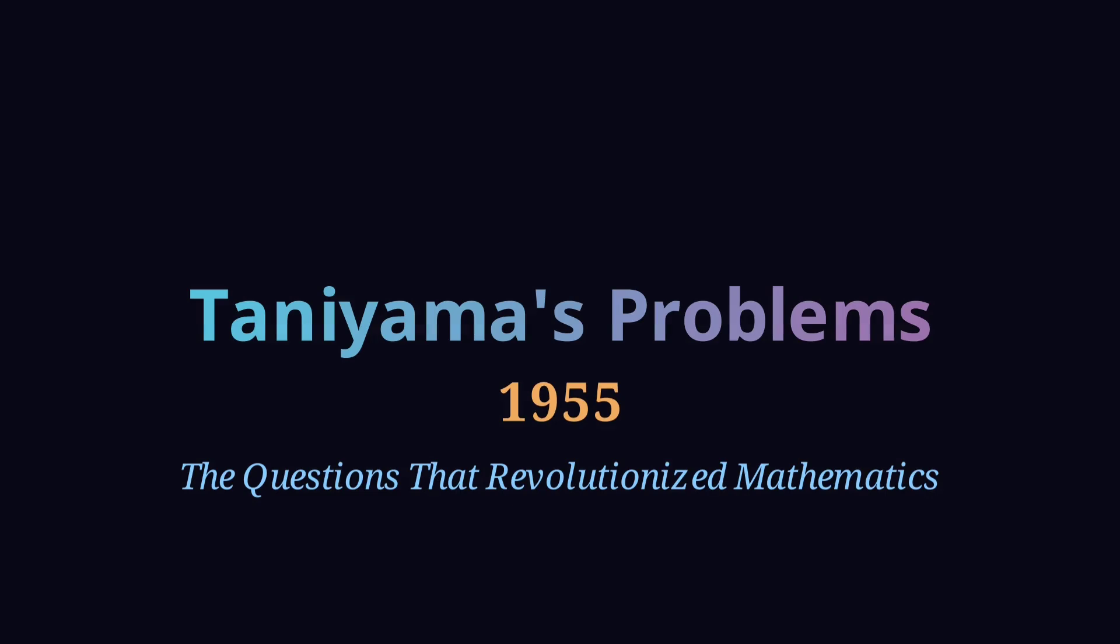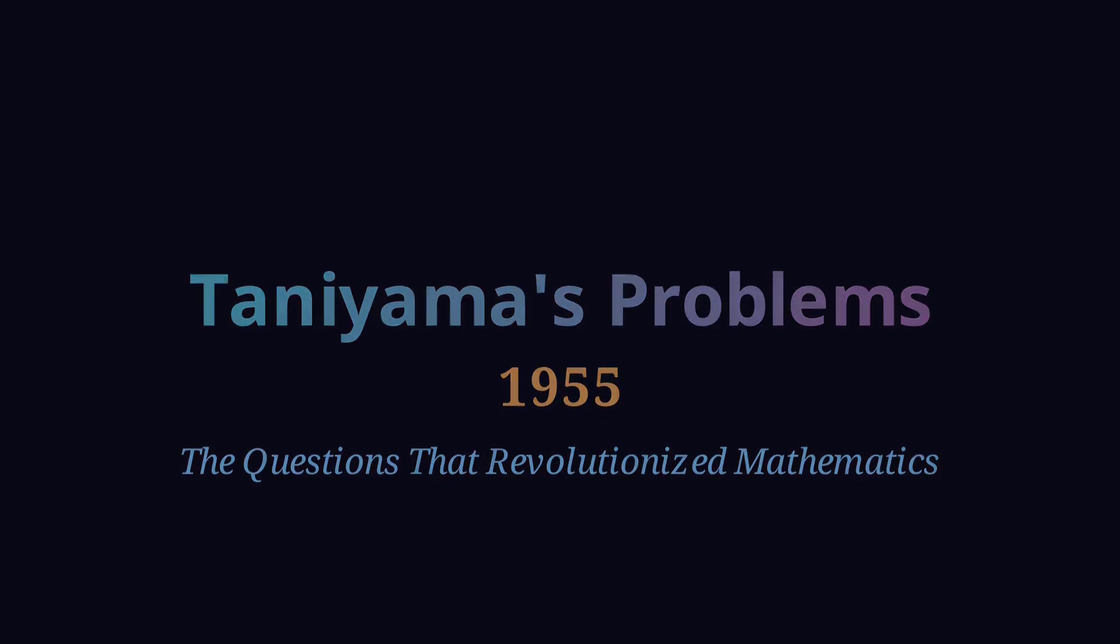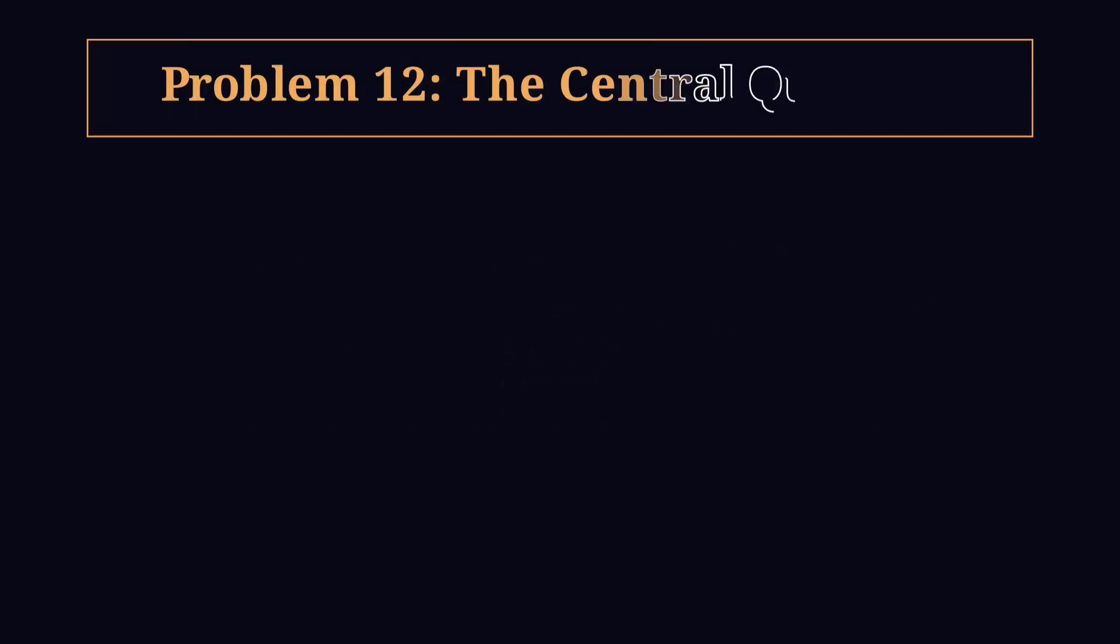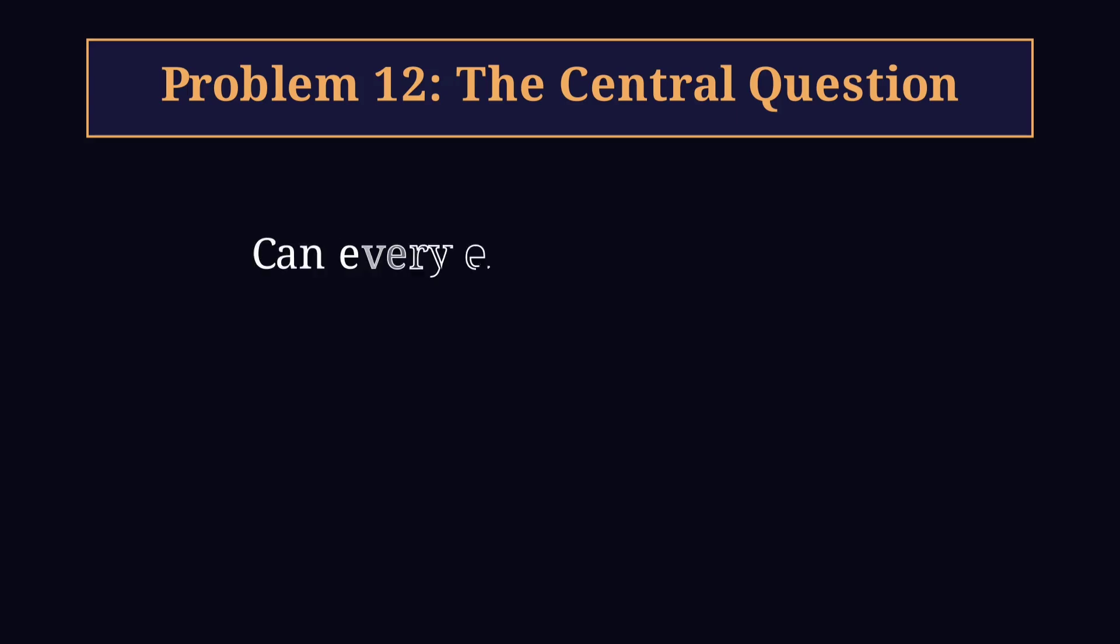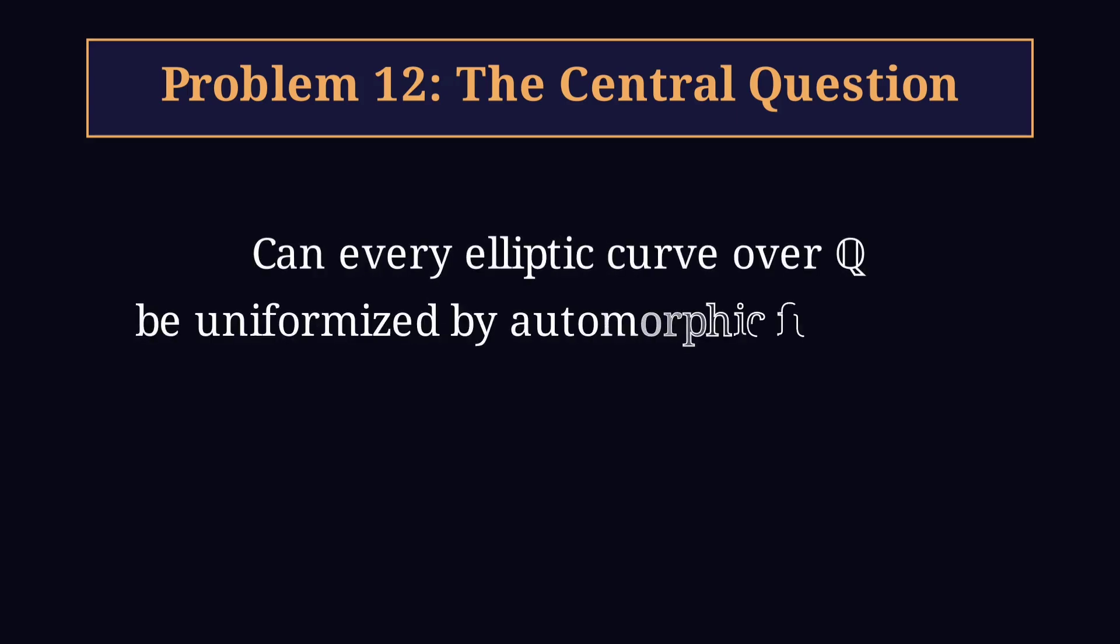Among them stood one problem, problem 12, the central question. Can every elliptic curve over rational numbers be described, or as mathematicians say, uniformized by automorphic functions?